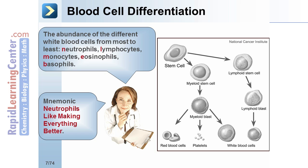Pro-erythroblasts develop into reticulocytes, which develop into erythrocytes. Myeloblasts differentiate into neutrophils, eosinophils, and basophils with several stages of development: pro-myelocytes to myelocytes to metamyelocytes to stab cells. Monoblasts develop into monocytes. Megakaryoblasts develop into megakaryocytes, which develop into platelets. Lymphoblasts develop into T-cells and B-cells, which can further develop into plasma cells.